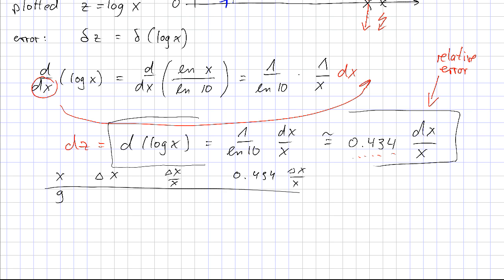For 9, this is 1, this is 1 ninth, and that's about 0.05. For 3 we have a relative error of 1 third, that's 0.15. And here we have a 100% relative error which gives us 0.43. So these are the numbers that we should use for our error bars.